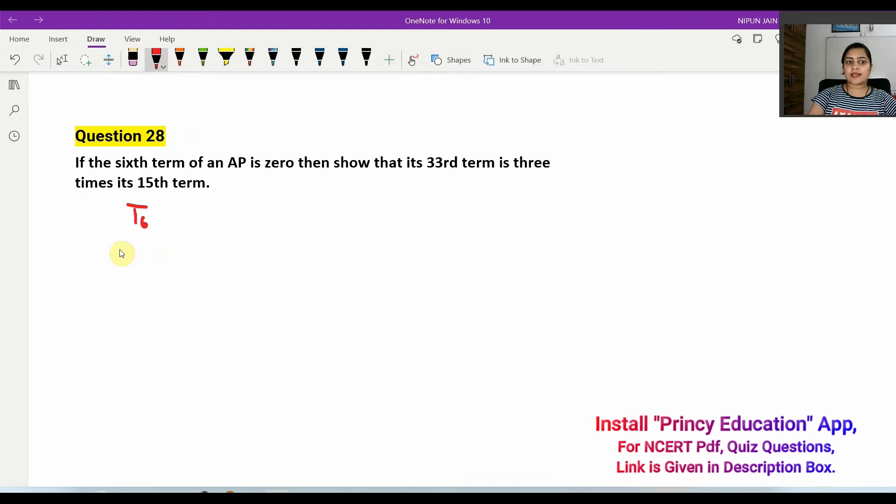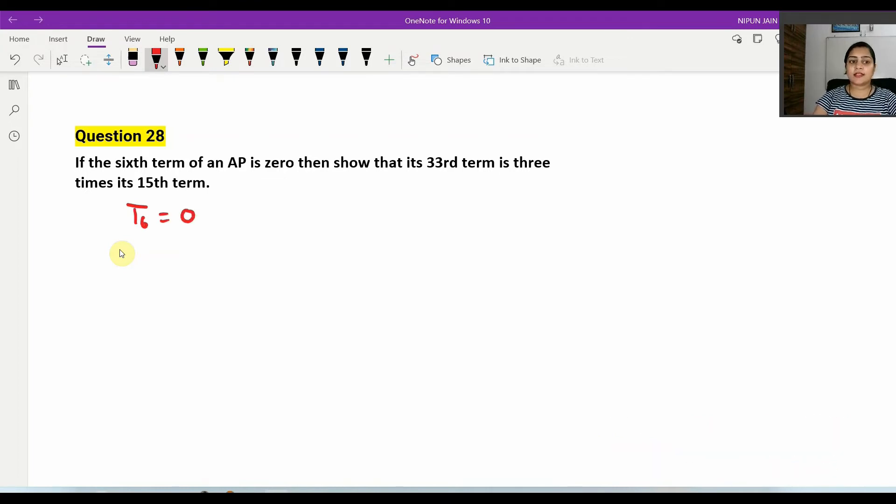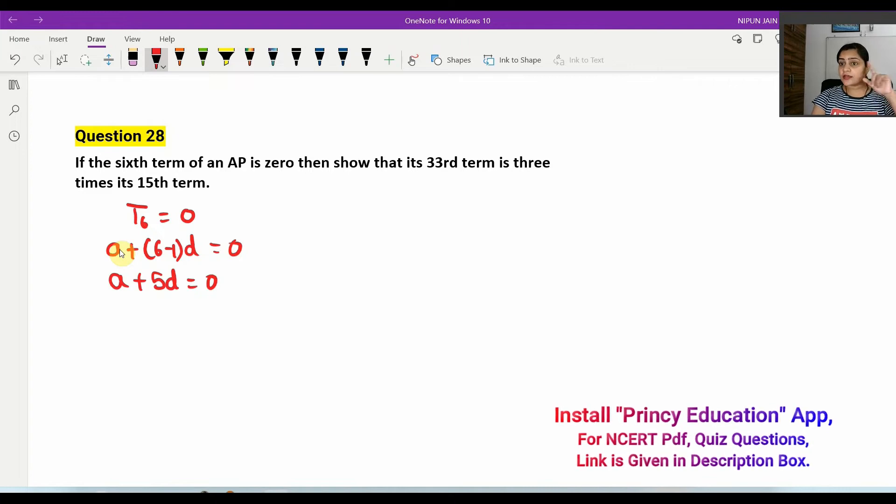So what is the 6th term? What is the value of T6? 0, right? So given T6 equals 0, we write A plus, and for T6, it's 6 minus 1 into D equals to 0. So A plus 5D is equal to 0, because the 6th term is 0.